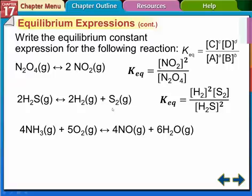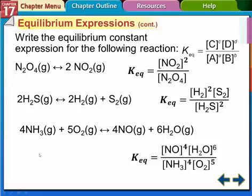For the final equation — the oxidation of ammonia — all species have coefficients, so each will have an exponent. The products go on top and the reactants on the bottom. The equilibrium expression is K-eq = [NO]⁴[H2O]⁶ / ([NH3]⁴[O2]⁵). That's all for this part-one video. Questions are answered below, and I'll see you in class tomorrow.